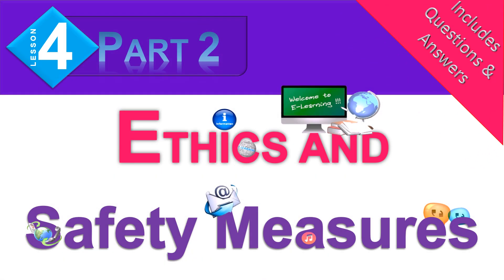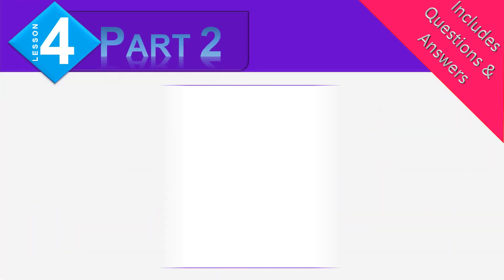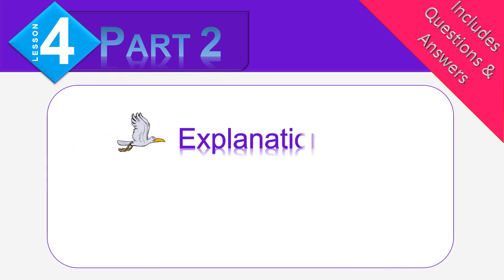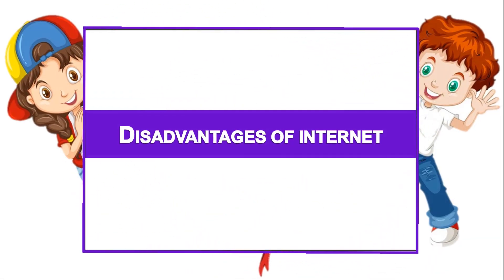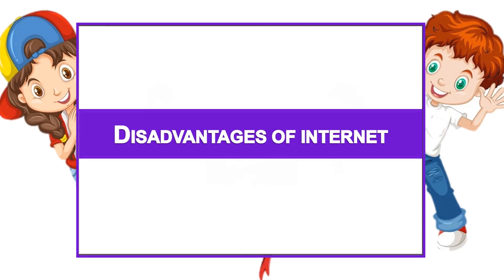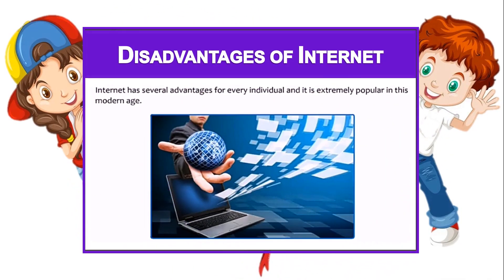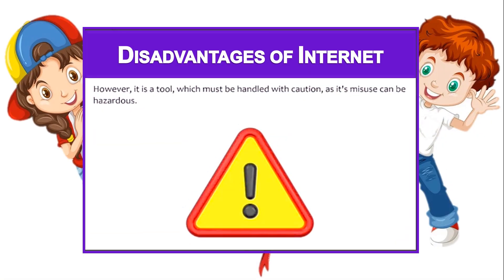Lesson number four: ethics and safety measures in computing, part two. This session includes explanation and then exercise at the end of the explanation. Today we'll be talking about the disadvantages of internet. Internet has several advantages for every individual and is extremely popular in this modern age. However, it's a tool which must be handled with caution as its misuse can be really dangerous.